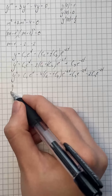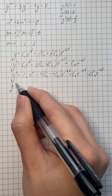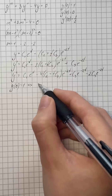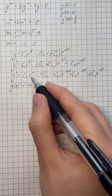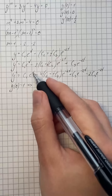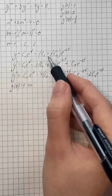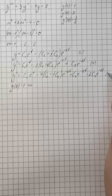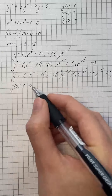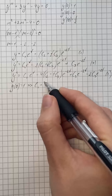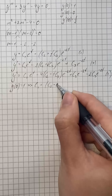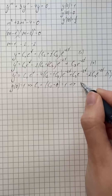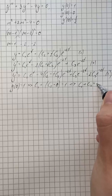Now we apply the initial condition y of 0 equals 1. Substituting t equals 0 into the first equation gives c1 plus c2 plus 0 equals 1, so c1 plus c2 equals 1.